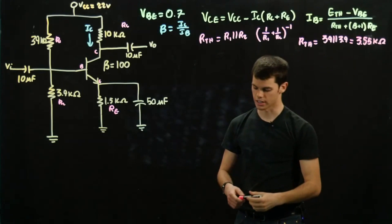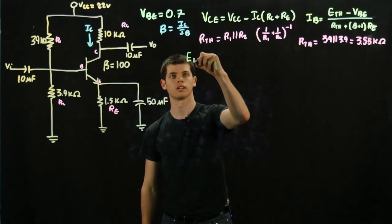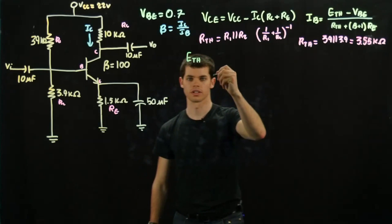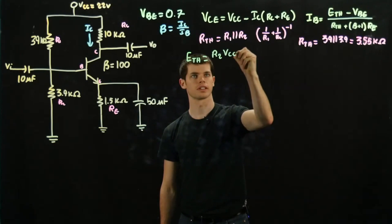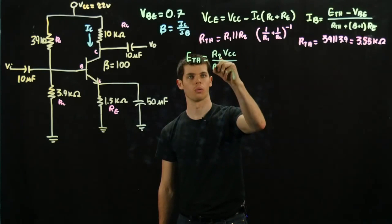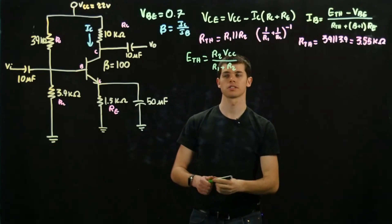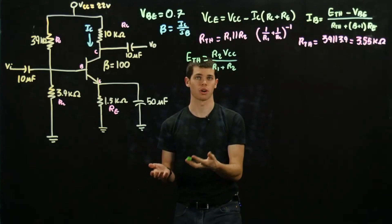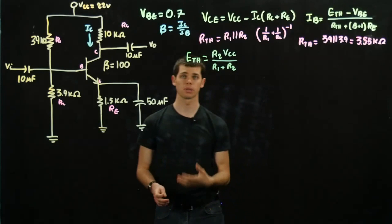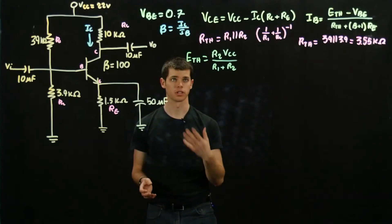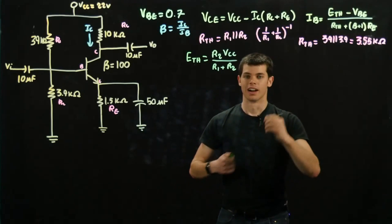That's R-thevenin. Next, we're going to find E-thevenin. And E-thevenin is equal to R2 times VCC divided by R1 plus R2. So a lot of these formulas, you may ask where are these all coming from. Most of them are given to you or they're in the book. They can all be derived independently, but just for the sake of time, most of the formulas are given to you. If not, you'd be here for a long time.